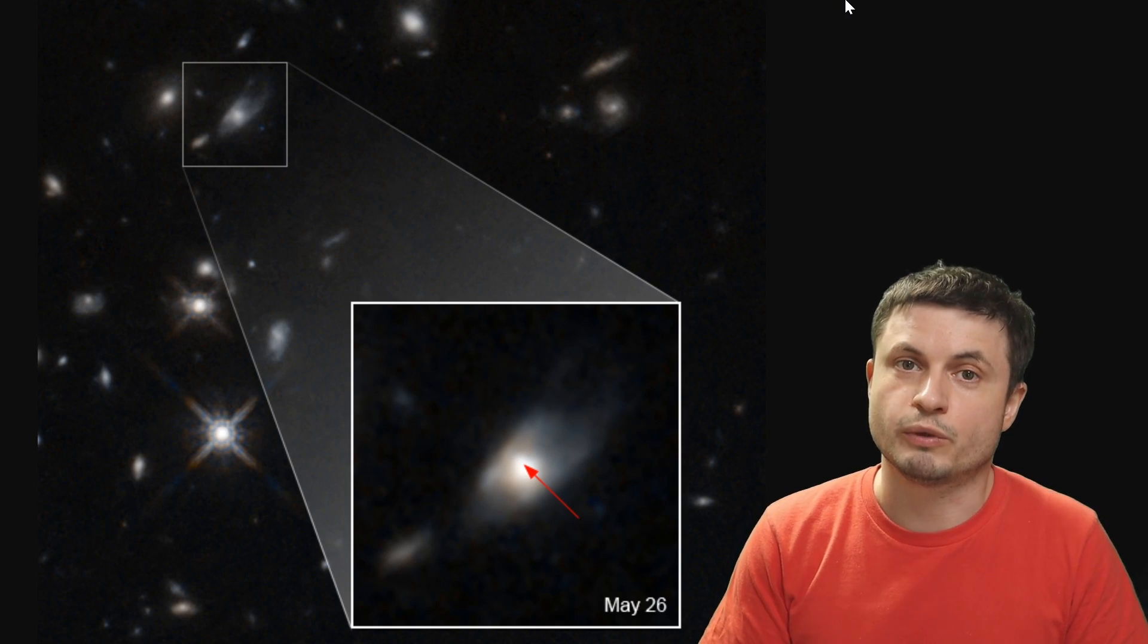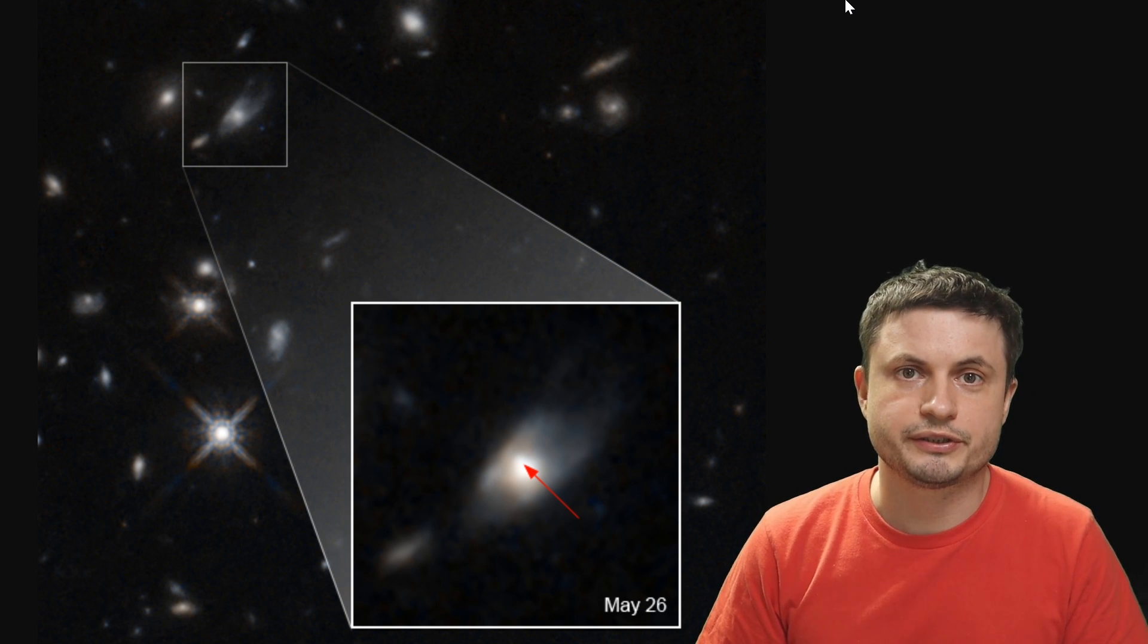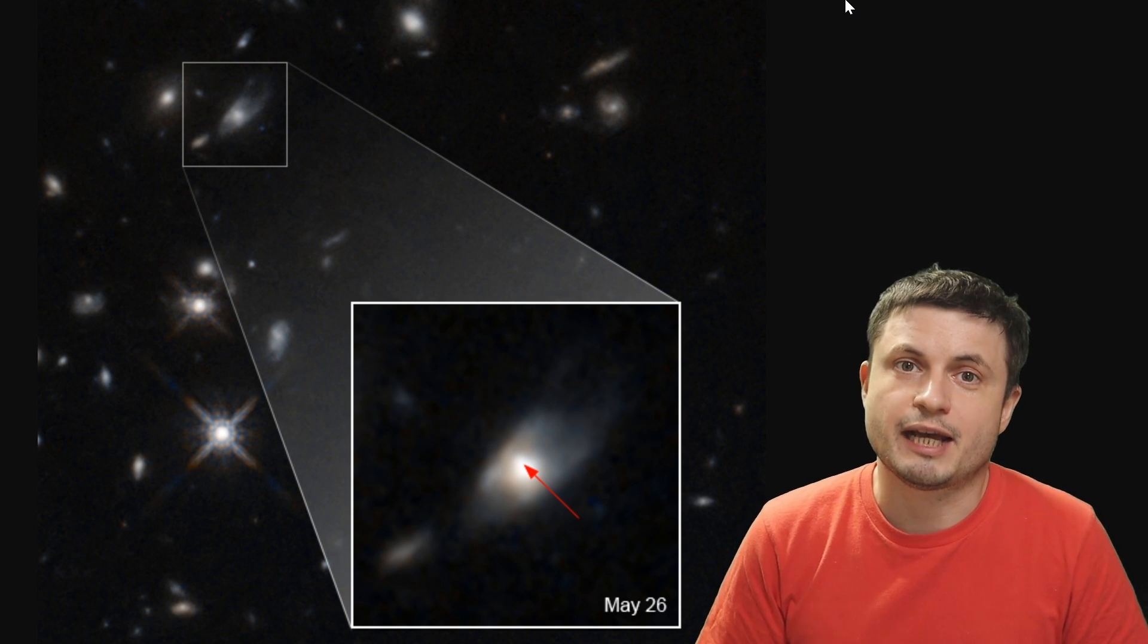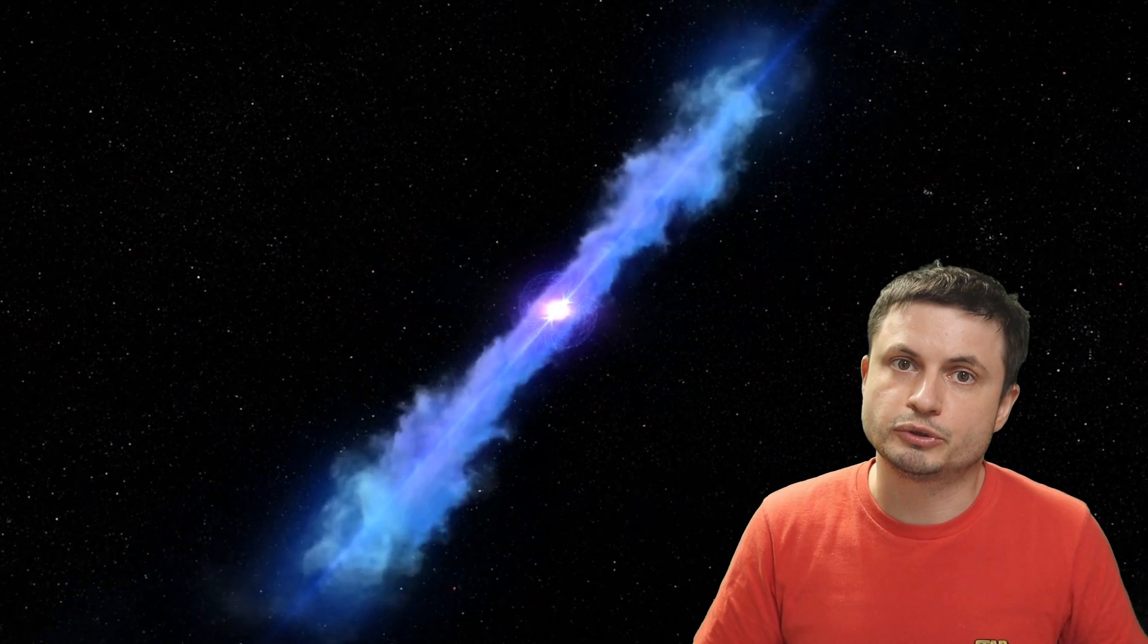And that something was most likely once again a collision between two neutron stars that ended up producing not a black hole but very likely a magnetar.